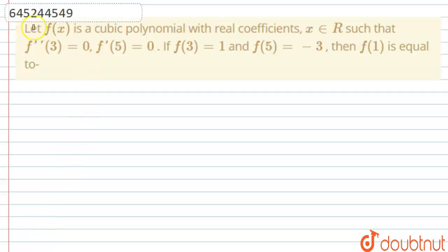Hello everyone, let us start this question. This question says that let f(x) be a cubic polynomial with real coefficients, x belonging to the real numbers, such that f''(3) = 0, f'(5) = 0. If f(3) = 1 and f(5) = -3, then we need to find f(1).